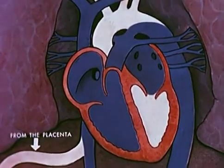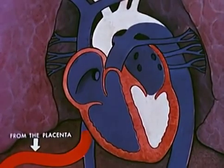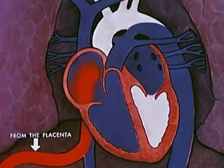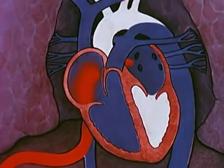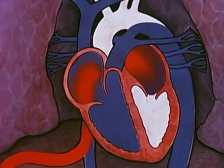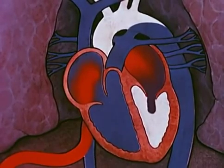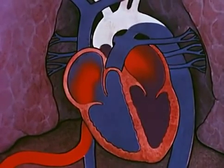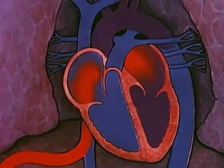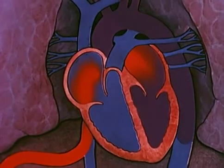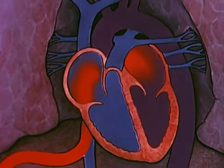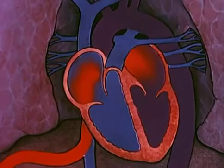Oxygenated blood from the placenta enters the inferior vena cava, but tends to stream across the right atrium through the foramen ovale and into the left atrium to supplement the scanty pulmonary venous return. This mixture of venous and oxygenated blood enters the left ventricle and is pumped into the aorta, from which the carotid arteries arise to supply the brain. Through the descending aorta, partially oxygenated blood is distributed to the lower portions of the body. This circulatory pattern persists throughout the remainder of fetal development.